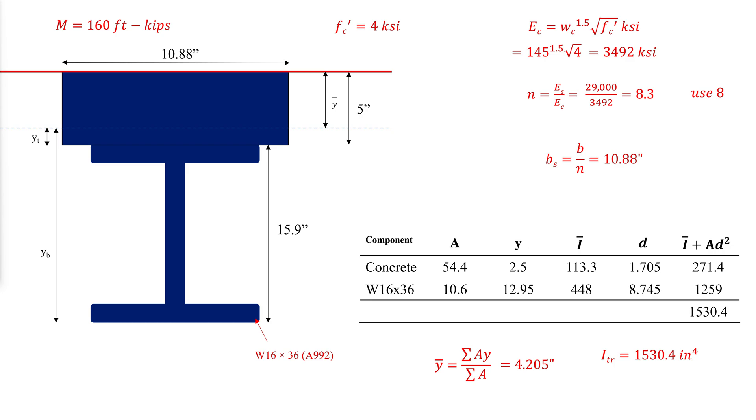Because everything below the neutral axis in a positive applied bending moment will be in tension, the top of the steel will be in tension. Of course, so will the stress at the bottom of the steel. As for the stress at the top of the concrete, that will be in compression.